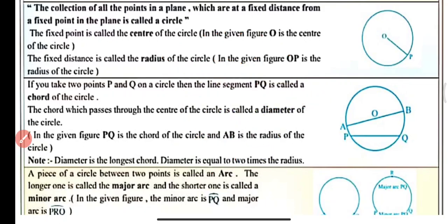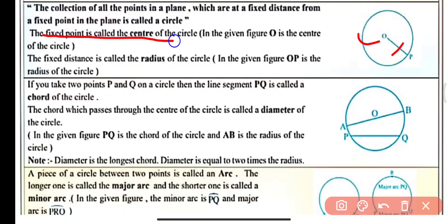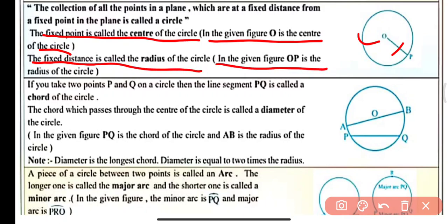In the figure, we are given the fixed point O as the center of the circle, and the fixed distance OP as the radius of the circle. The fixed point is called the center of the circle — in the given figure, O is the center. The fixed distance is called the radius of the circle — here in the figure, OP is the radius of the circle.